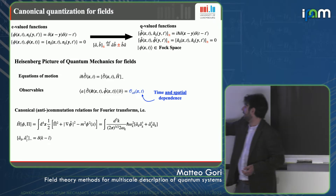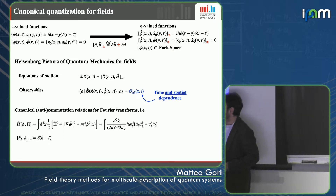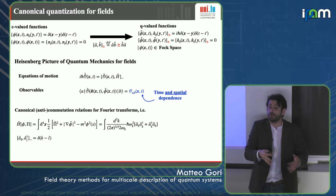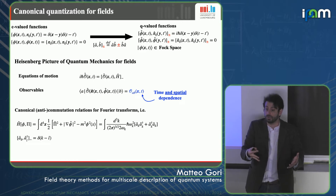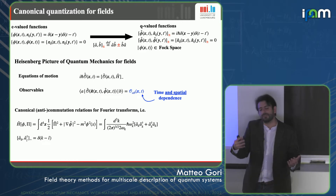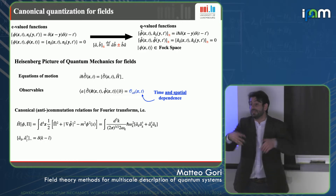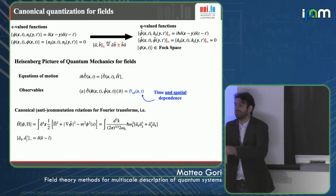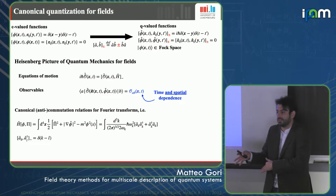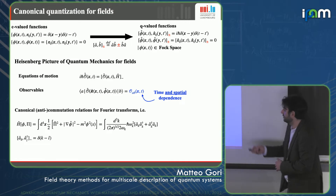With these operators — commuting for scalar or integer-spin fields, anti-commuting for half-integer spin — we have the equations of motion. For scalar or integer representations, they commute; for the same half-integer representations, they anti-commute.